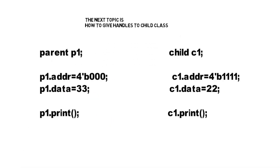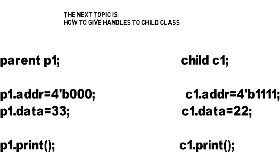The next topic is how to give handles to the child class. In the previous video, we learned how to give handles to a class, and how to access variables and utilize functions. In the same way, the child class can also access variables and functions. The key feature of the child class is it can access all the variables and all the functions from the parent class. For example, c1.print — print is a parent class function — and address and data are parent class variables, which we can use with the child handle as well.